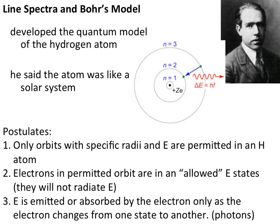Bohr postulated that only orbits — these pathways — with specific radii and energy are permitted in the hydrogen atom. His second postulate is that electrons in permitted orbits are only allowed in these specific energy states, meaning they remain where they are and don't radiate any energy. The third postulate is that energy is going to be emitted or absorbed by electrons when they transition between different orbits. These are the three postulates Bohr proposed.